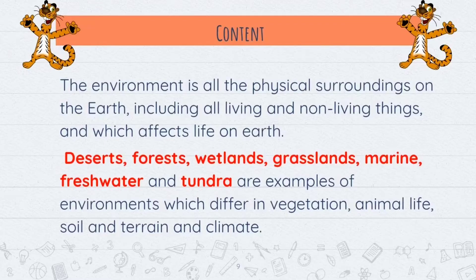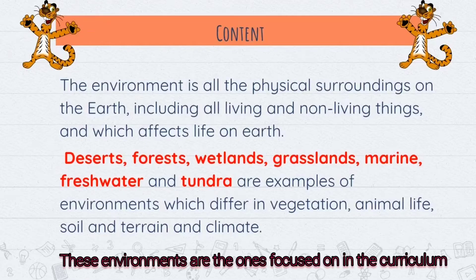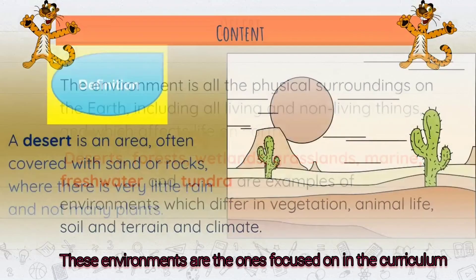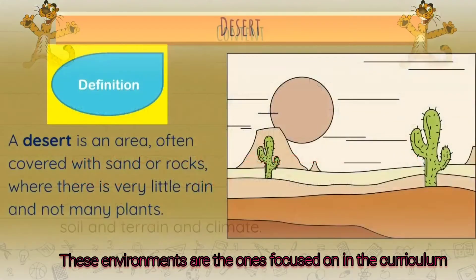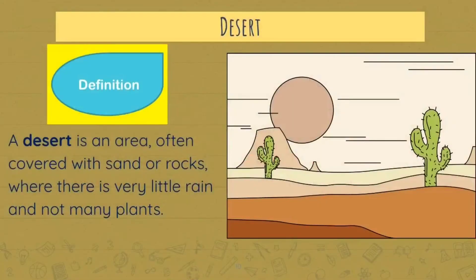The environment is all the physical surroundings on earth, including all living and non-living things, and which affect their life on earth. Examples include deserts, forests, wetlands, grasslands, marine, freshwater, and tundra. We're going to look at them one by one.